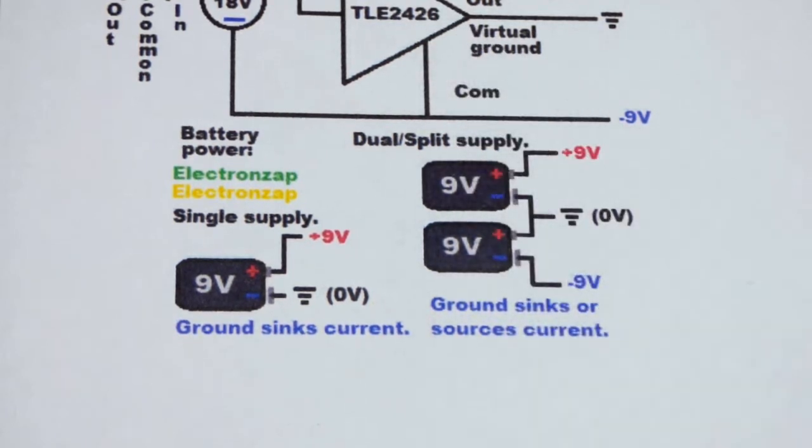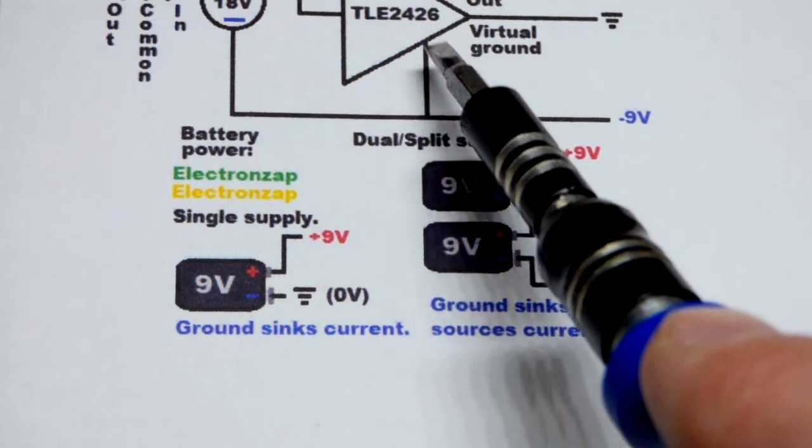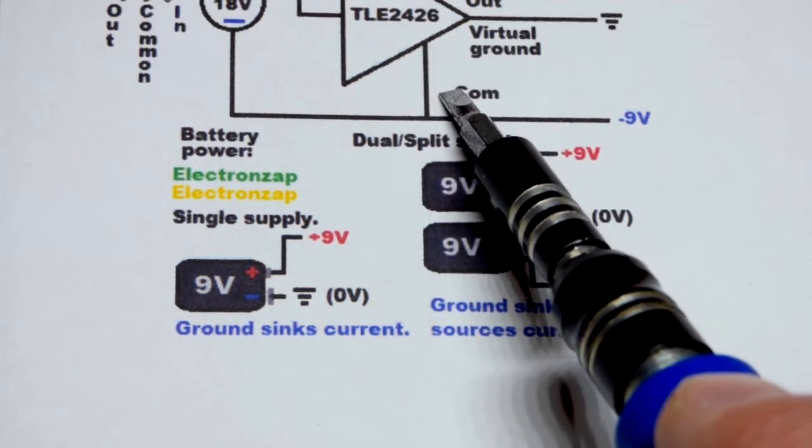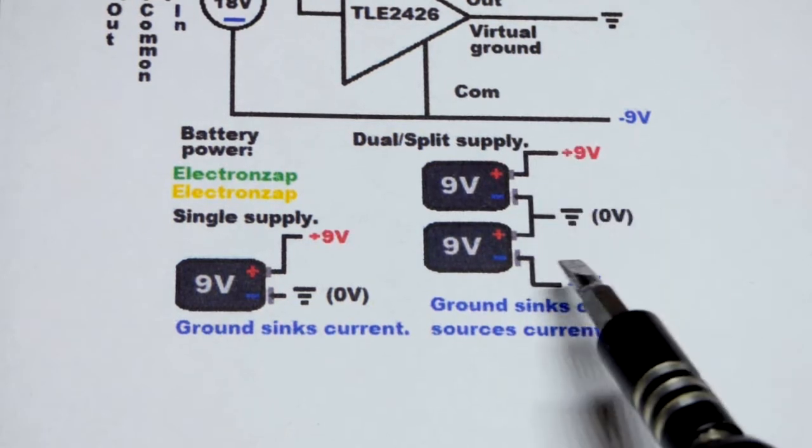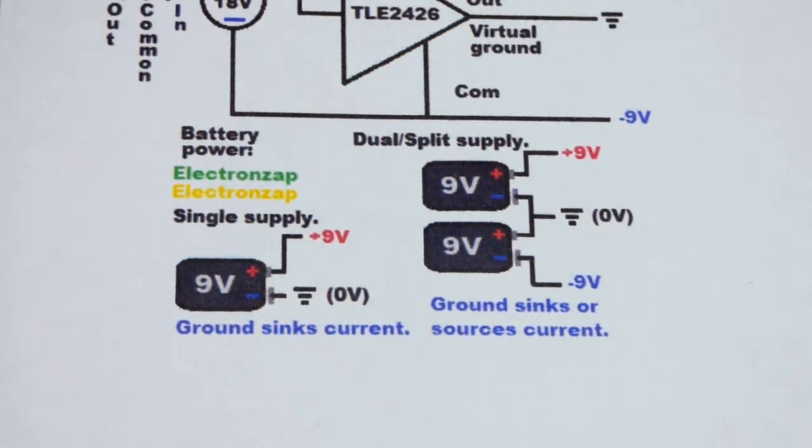So it works the same with the integrated circuit. Now, the integrated circuit can only sink and source a recommended amount of 20 milliamps of current, whereas the batteries could do a lot more. So you may have to actually use batteries if you need a stronger dual supply.